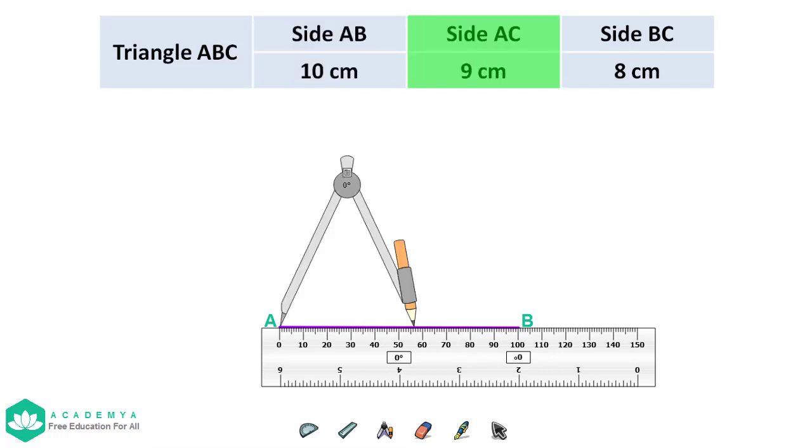Second step, using a compass, draw an arc 9 cm away from A.